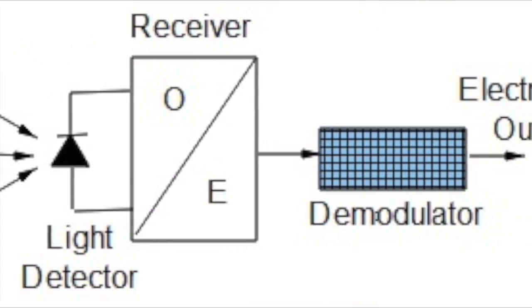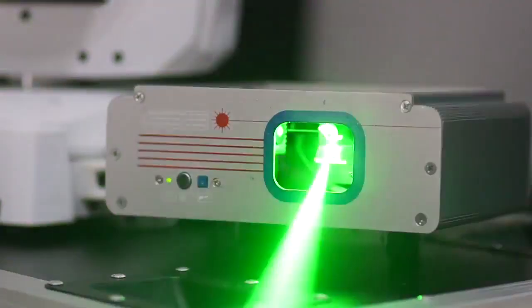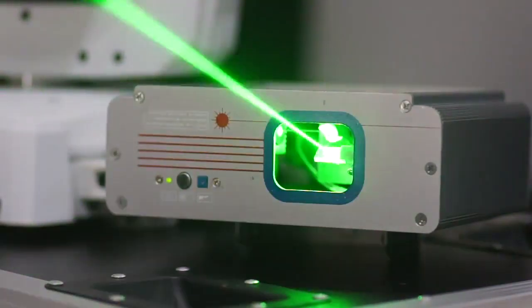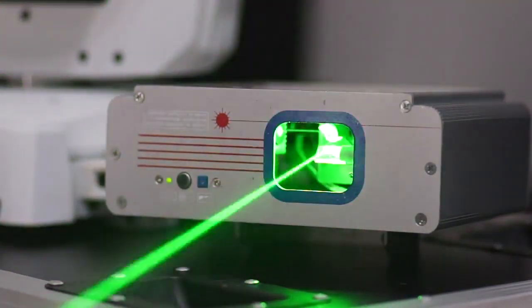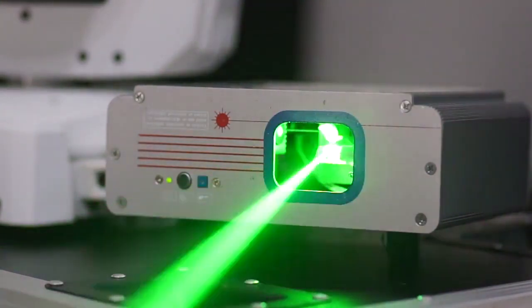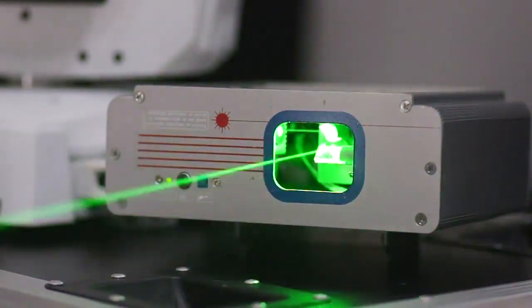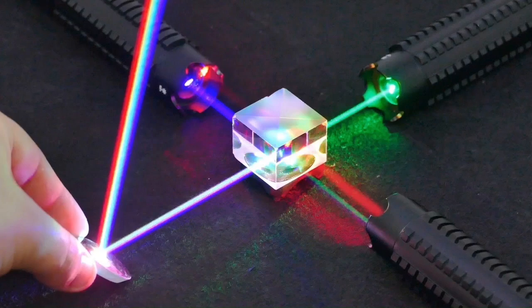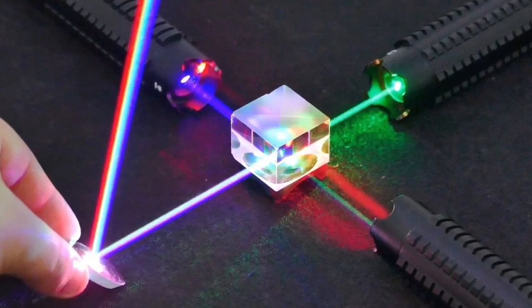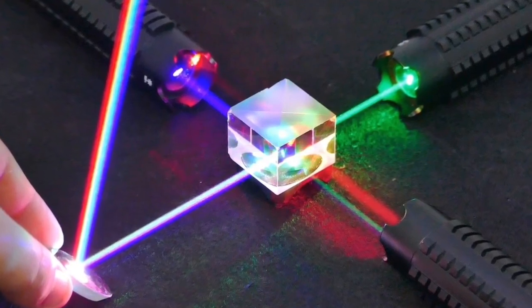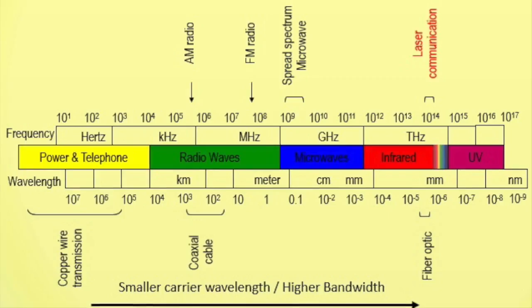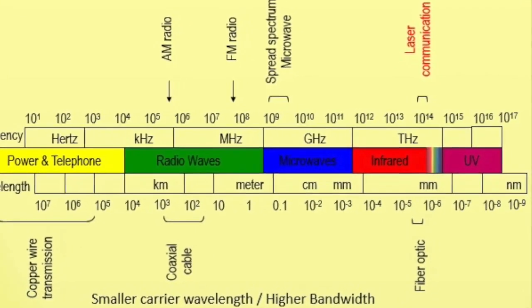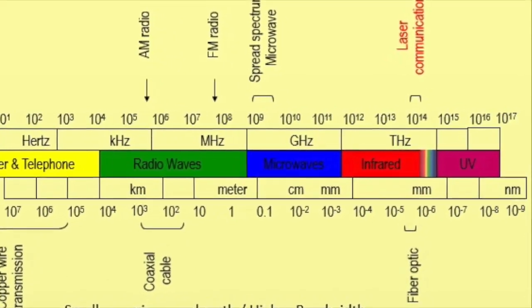FSO operates between 780 to 1600 nanometer wavelength and uses optical-to-electrical and electrical-to-optical signal converters. FSO requires light which can be focused by either light-emitting diodes or lasers — that is, light amplification by stimulated emission of radiation. The use of lasers is a simple concept similar to optical transmissions using fiber optic cables; the only difference is the transmission media. Light travels through the air faster than it does through glass, so it is fair to classify FSO as optical communication at the speed of light.